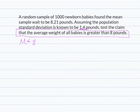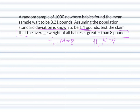Step two: write the null and alternative hypotheses. The null hypothesis is that the mean equals 8 pounds. The alternative hypothesis matches the claim, so the mean is greater than 8 pounds. Step three: determine the significance level. Since a significance level is not given, we will assume 0.05. If they don't give you one, just use 0.05.